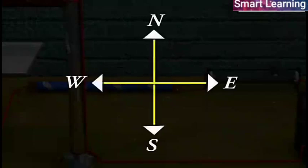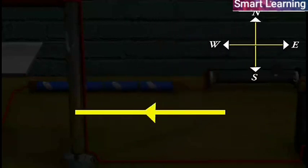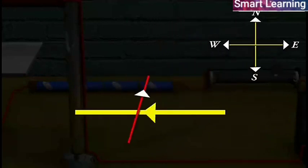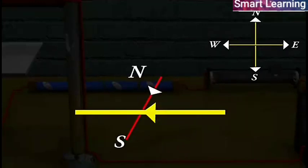Suppose current through a horizontal power line flows in east to west. The direction of the magnetic field at a point directly above the wire is from south to north. But the direction below the wire is from north to south.